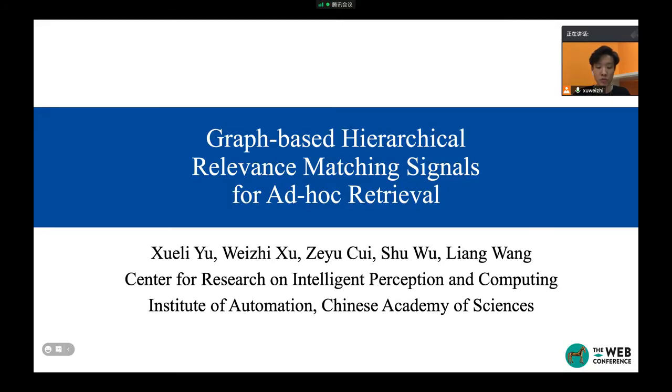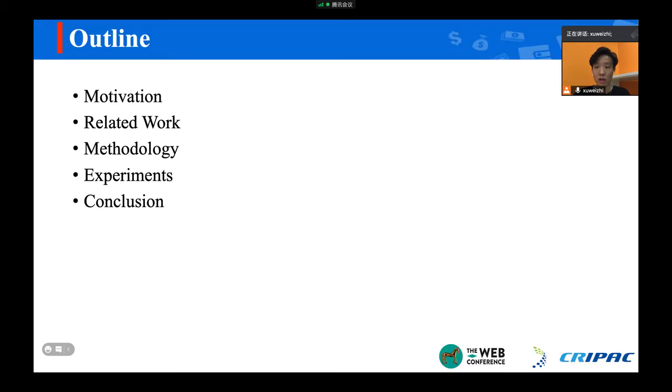Hello everyone, I'm Xu Wei-Zhi from Institute of Automation, Chinese Academy of Science. Here I will introduce our proposed hierarchical model based on graph representation learning to alleviate some problems existing in ad-hoc retrieval. This is the outline of my speech today. First of all, let me show you the main motivation of our work.